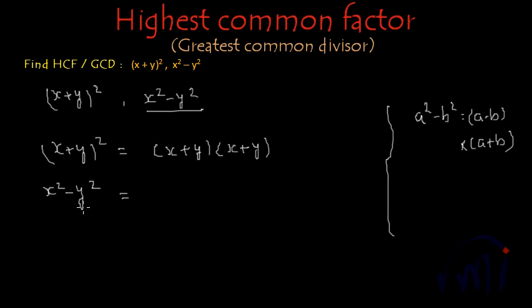So x square minus y square will be x minus y multiplied by x plus y. So now we have factorized both the expressions and what is the next step?